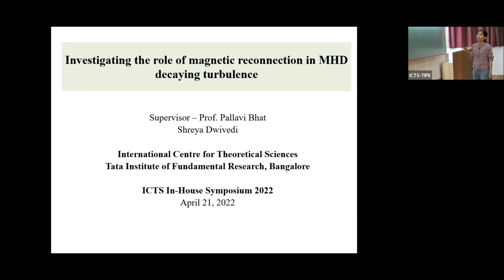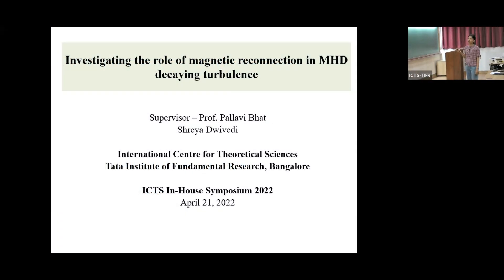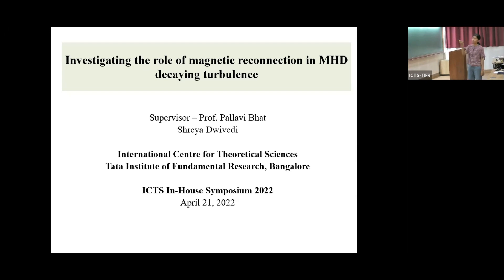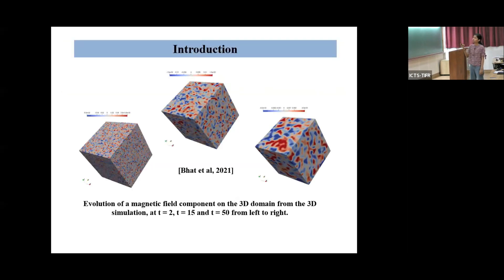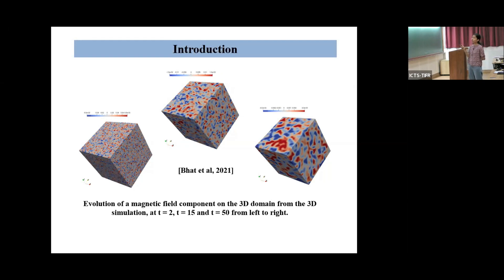I'm working on a project on the topic of investigating the role of magnetic reconnection in MHD decaying turbulence under my supervisor Pallavi Bhatt. It's well known from the literature that inverse energy transfer occurs in 3D decaying turbulence only when there is a magnetic helicity or non-zero helical magnetic field present in the system.